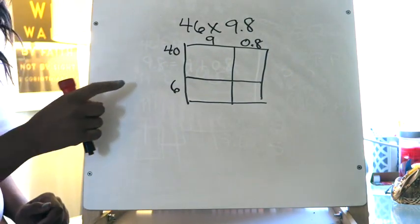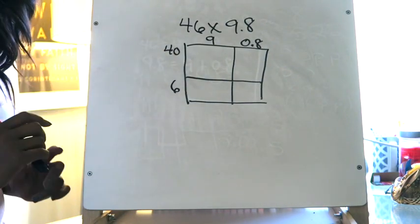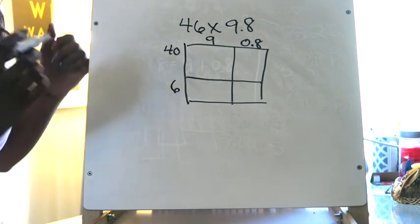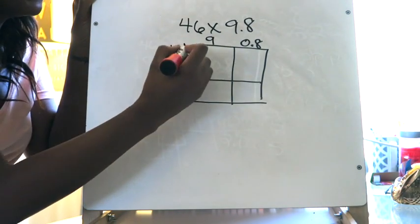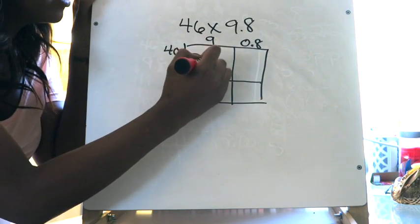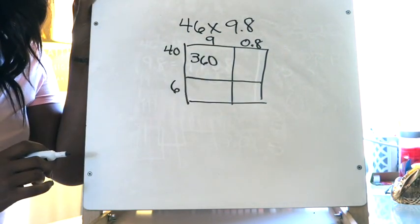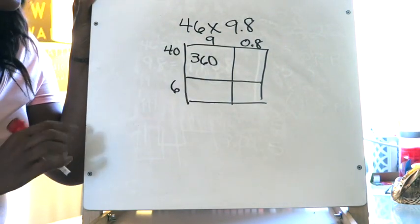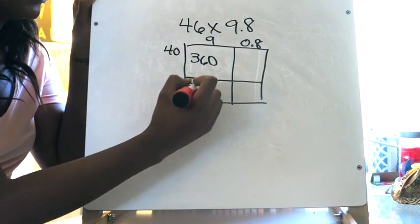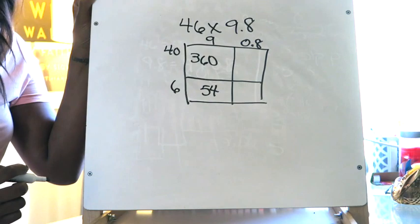I'm going to start by multiplying. 9 times 40 should be a mental math problem — just do 4 times 9 which is 36, then add a zero, giving you 360. Then 9 times 6 is a basic fact: that's 54. Put it in that box.